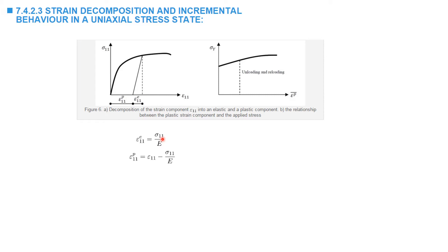The elastic strain is always equal to the stress divided by Young's modulus. The plastic strain is the remaining component — the total strain minus the elastic strain. A new curve can then be drawn relating the yield stress with the plastic strain. This curve provides the information in the strain-hardening region,